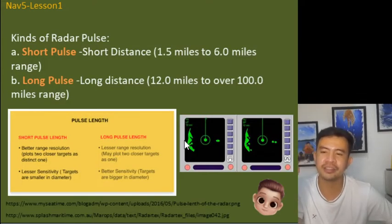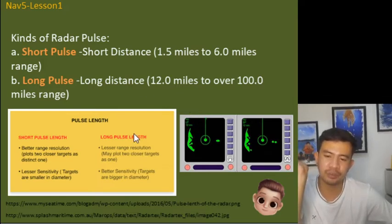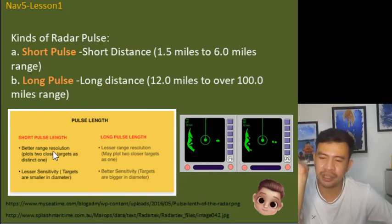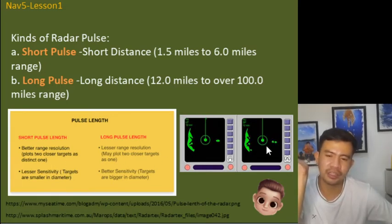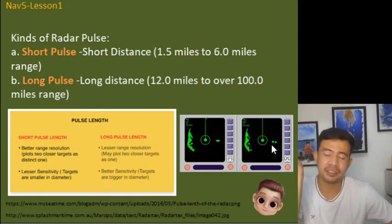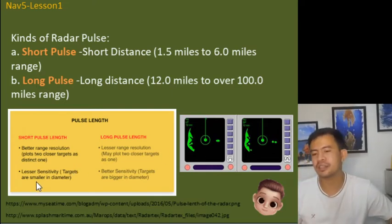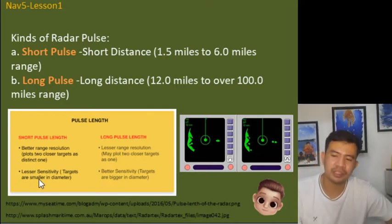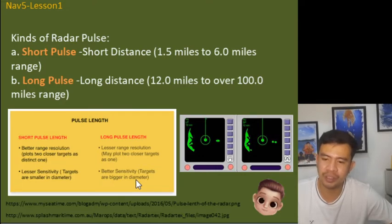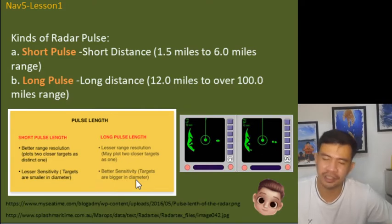Regarding the kinds of radar pulses, we have short pulse and long pulse. Short pulse provides better range resolution — it plots two closer targets as distinct ones, displaying two different targets separately. Long pulse, however, may combine them into what appears as a single target. With short pulse, targets are smaller in diameter, while with long pulse there is better sensitivity and targets appear bigger in diameter.